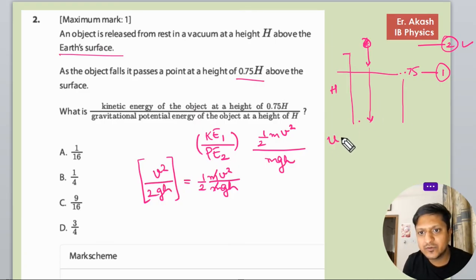Here u is equal to 0, v is what we have to find, and the distance that will be traveled by the body is 0.25h because this is complete h and this is 0.75h. So this will be 0.25h.